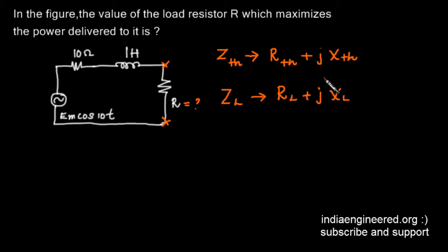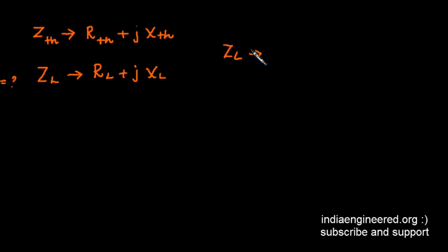In the general case, for maximum power transfer, ZL should equal the conjugate of ZTH. That means if you have 10 - 5j as the impedance of a network, then for maximum power transfer, the load impedance should be 10 + 5j.